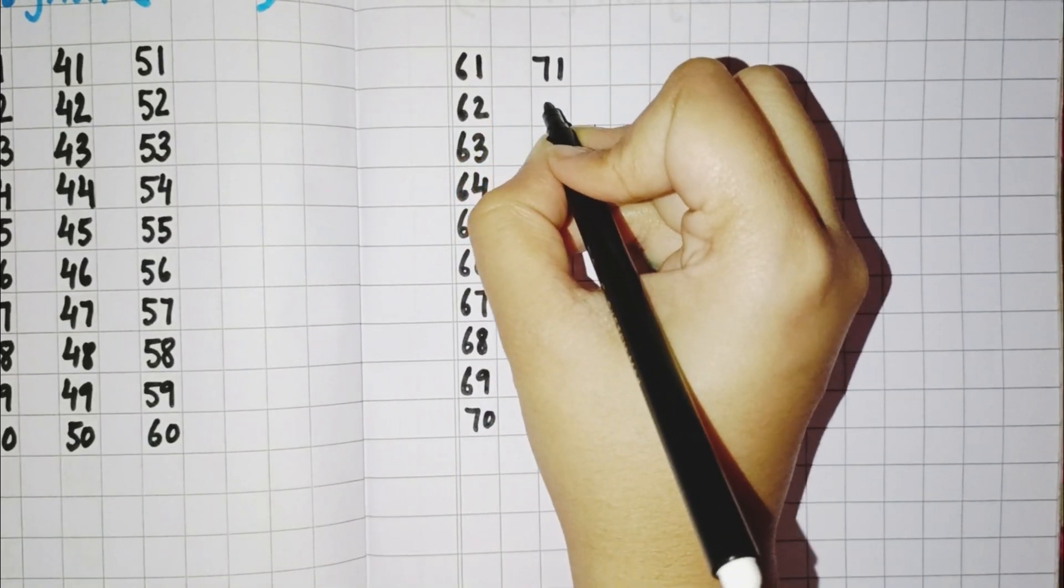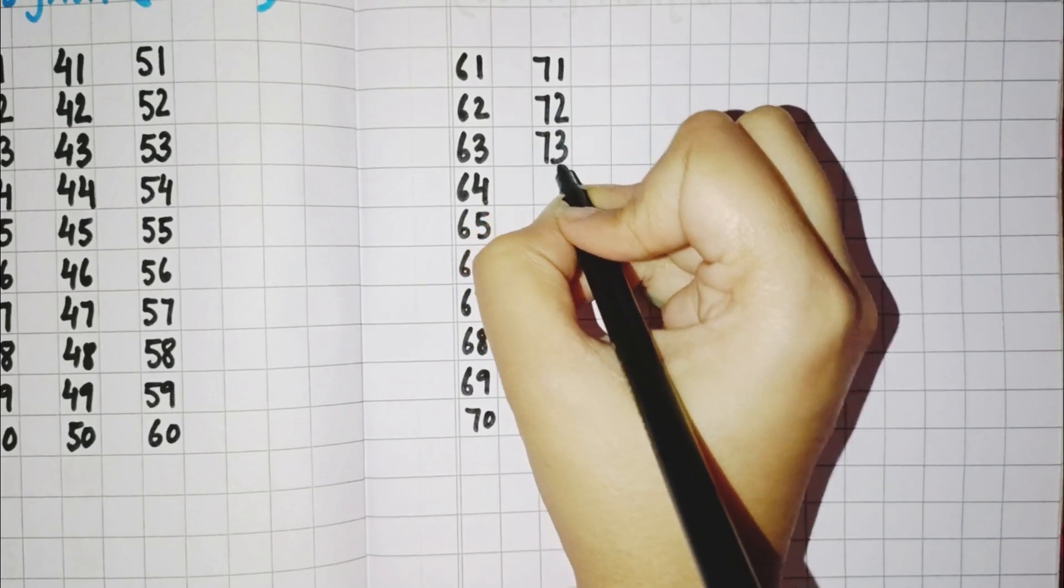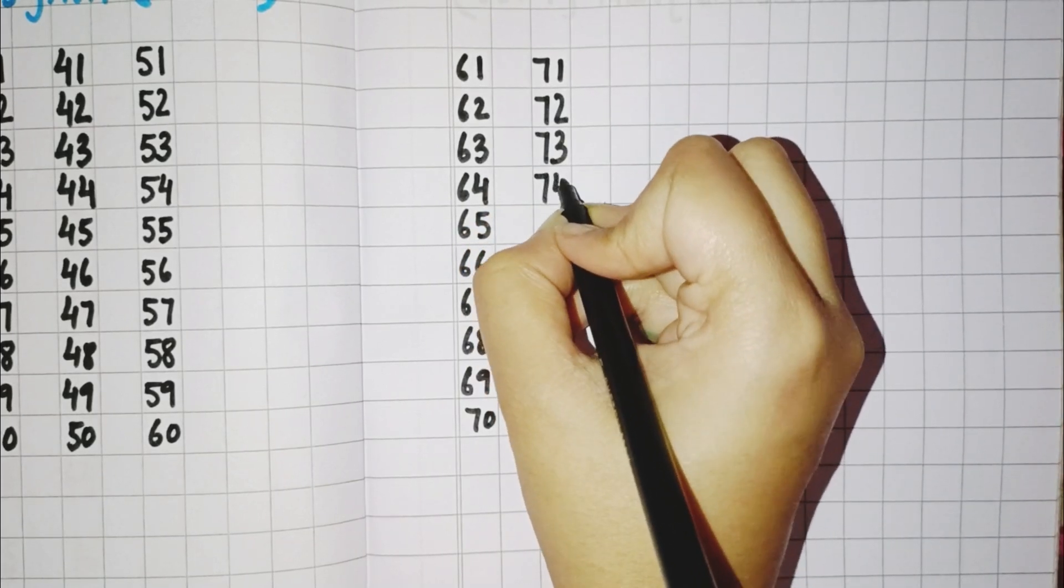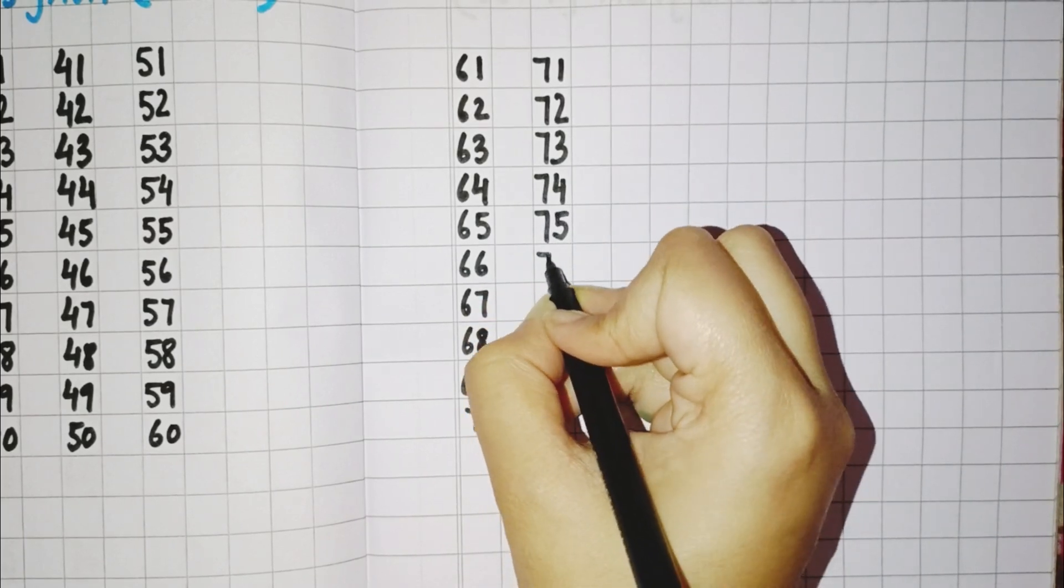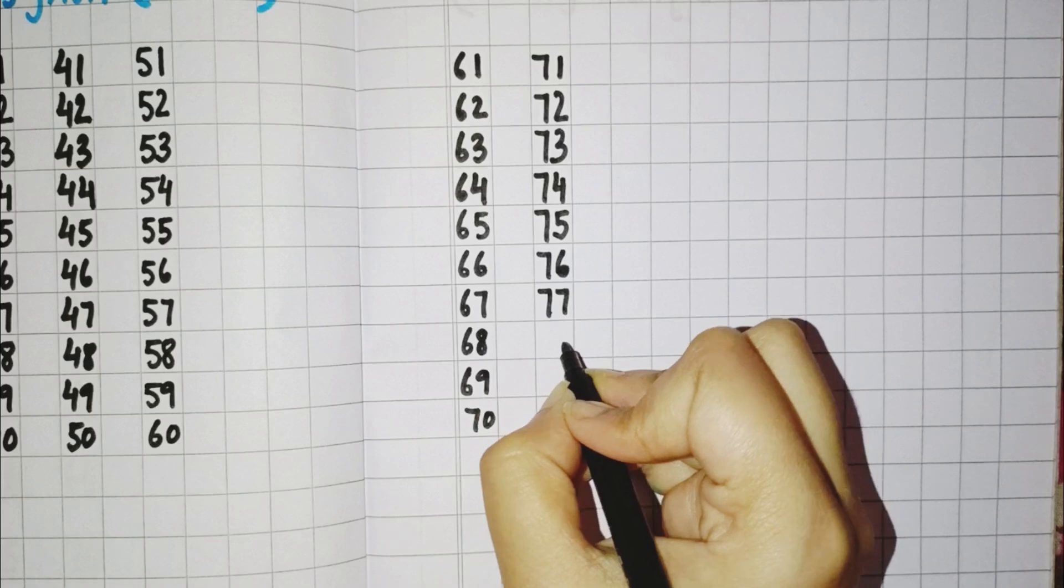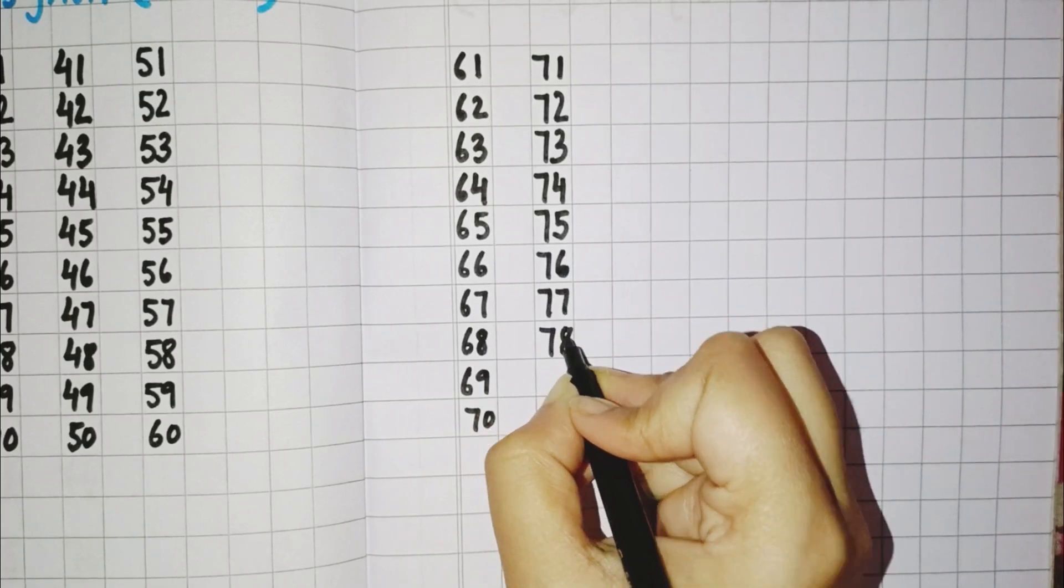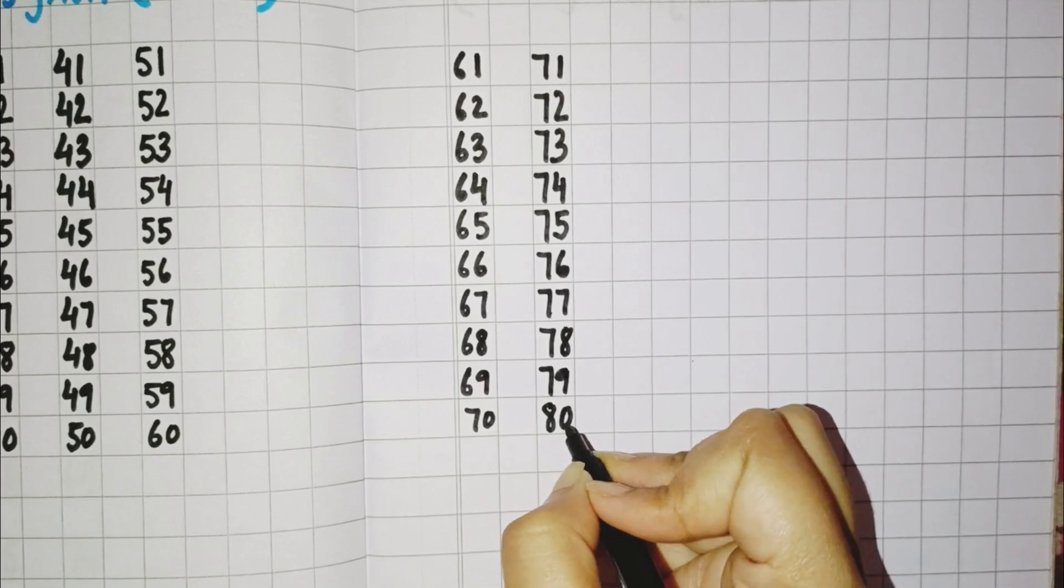7, 1, 71. 7, 71, 7, 72. 7, 73, 73. 7, 74, 74. 7, 75, 75. 7, 6, 76. 7, 7, 77. 7, 8, 78. 7, 9, 79. 8, 0, 80.